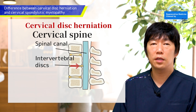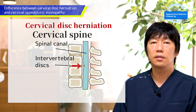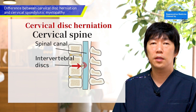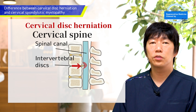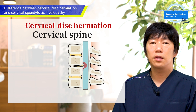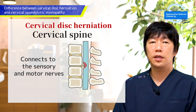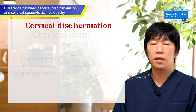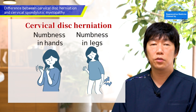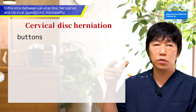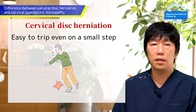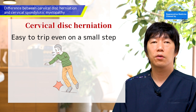As a result of aging and sport activities, the intervertebral discs can protrude into the spinal canal. The bulging disc will then compress the spinal cord inside the canal, since the spinal cord behind the cervical vertebrae connects to the sensory and motor nerves from the arms and legs. Compressed spinal cord causes numbness in hands and legs, and makes it hard to hold chopsticks or to fasten buttons. Other symptoms are weakness of the legs, causing one to trip even on a small step.